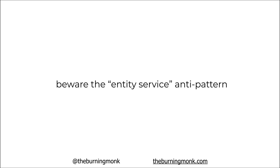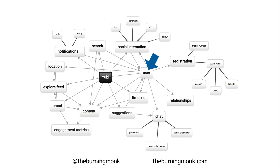One important thing to avoid is the so-called entity service anti-pattern, whereby you may be tempted to put everything that revolves around a user into a single user service, encompassing searching, creating, fetching users, registering users, relationships, having chats between different users — all of which are different problem spaces that involve the user entity. Instead, you should model your services along verticals of problem domains, such as search or relationships.